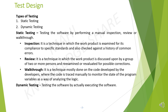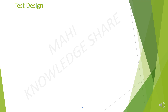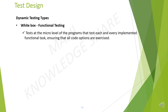Dynamic testing is testing the software by actually executing the software. It is of two types. One is white box testing and the other one is black box testing. White box testing means tests at the micro level of the programs that test each and every implemented functional task, ensuring that all code options are exercised. Black box testing comprises of two types: black box functional testing and black box non-functional testing.